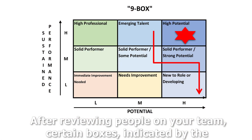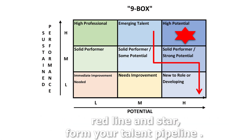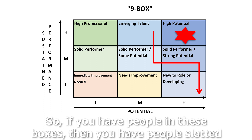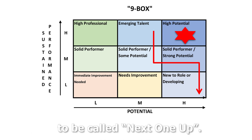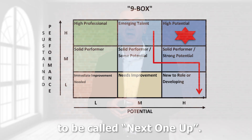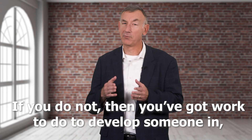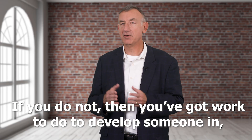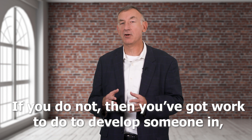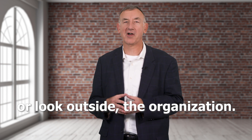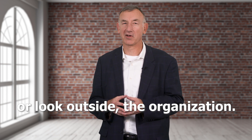After reviewing people on your team, certain boxes — indicated by the red line and star — form your talent pipeline. So if you have people in these boxes, then you have people slotted to be called next one up. If you do not, then you've got work to do to develop someone in or look outside the organization.